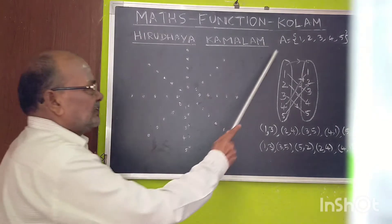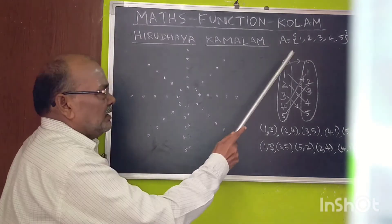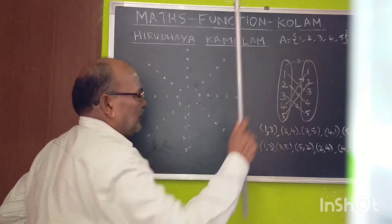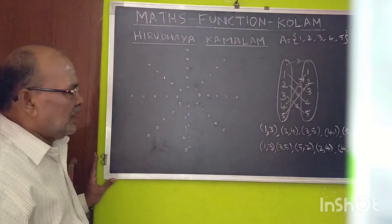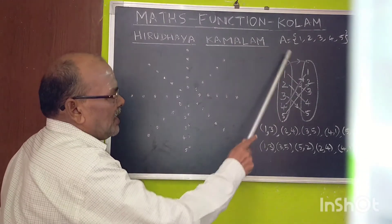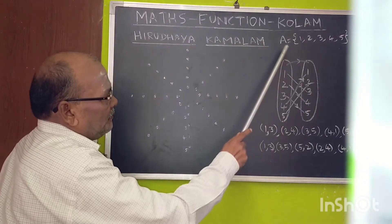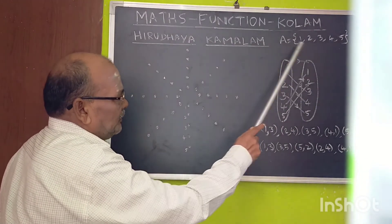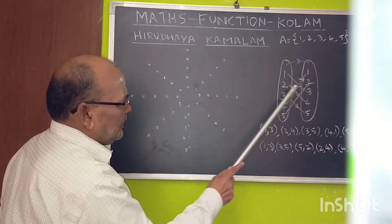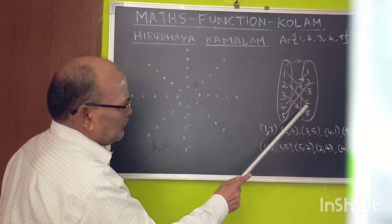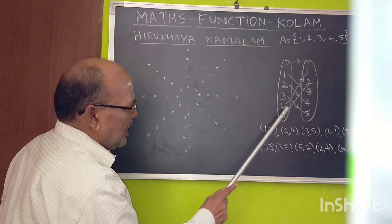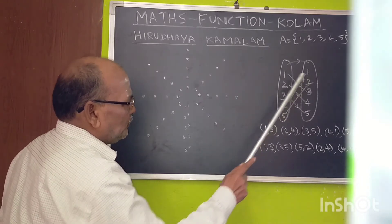I have taken a set A, which contains elements 1, 2, 3, 4, 5. The elements are mapped from set A to A: 1 is mapped to 3, 2 is mapped to 4, 3 is mapped to 5, 4 is mapped to 1, and 5 is mapped to 2.